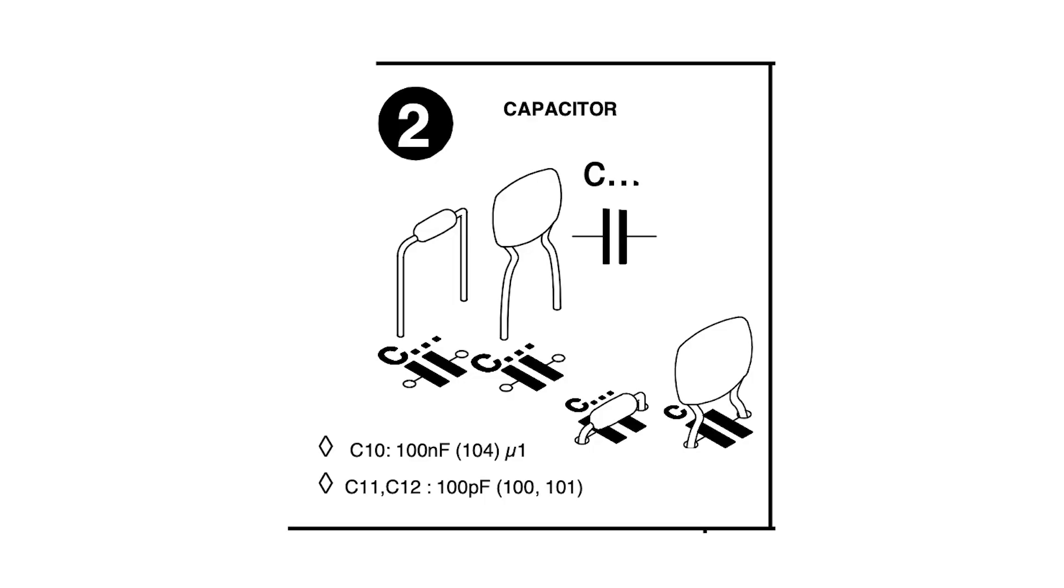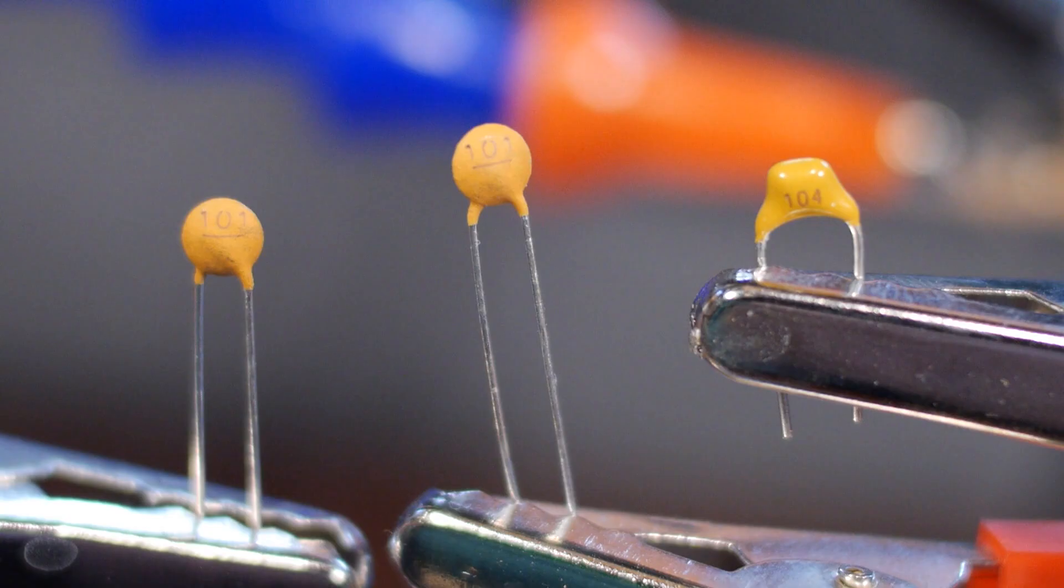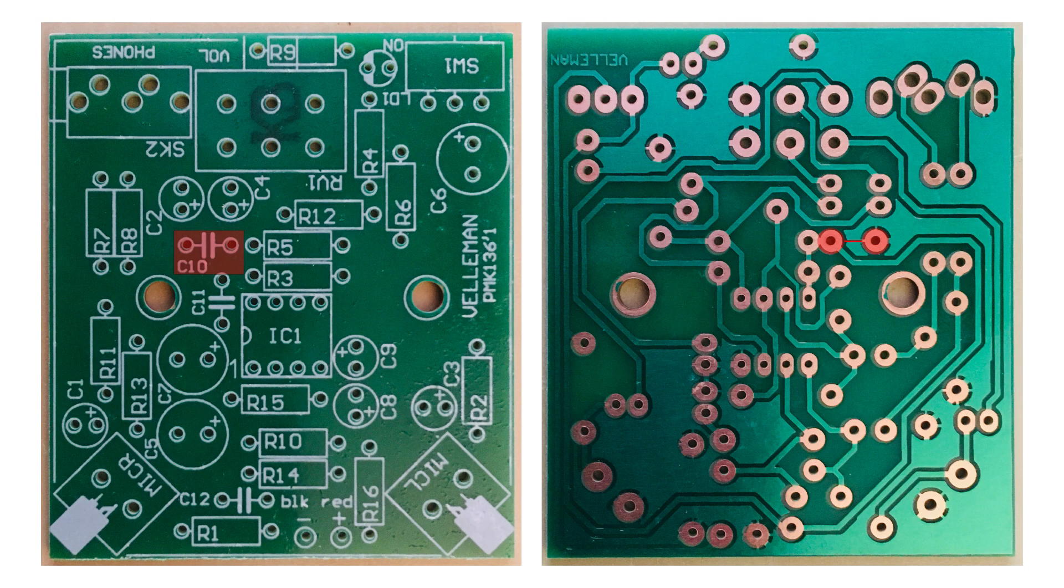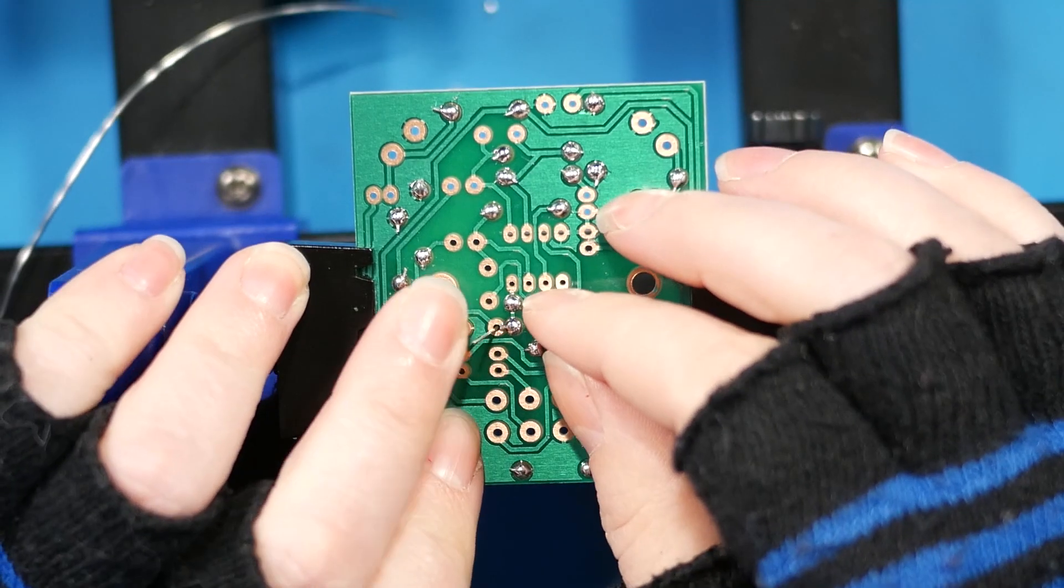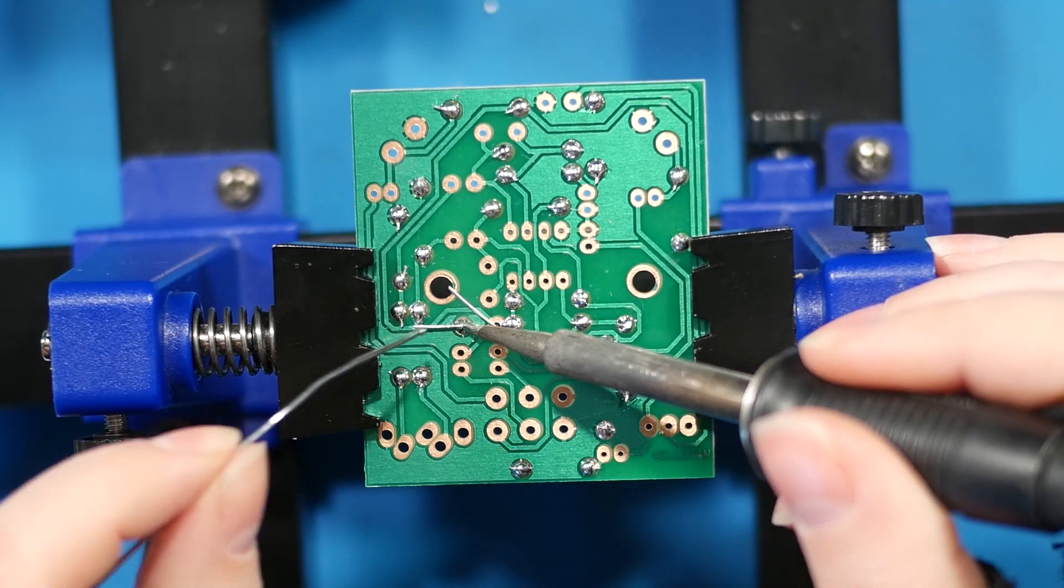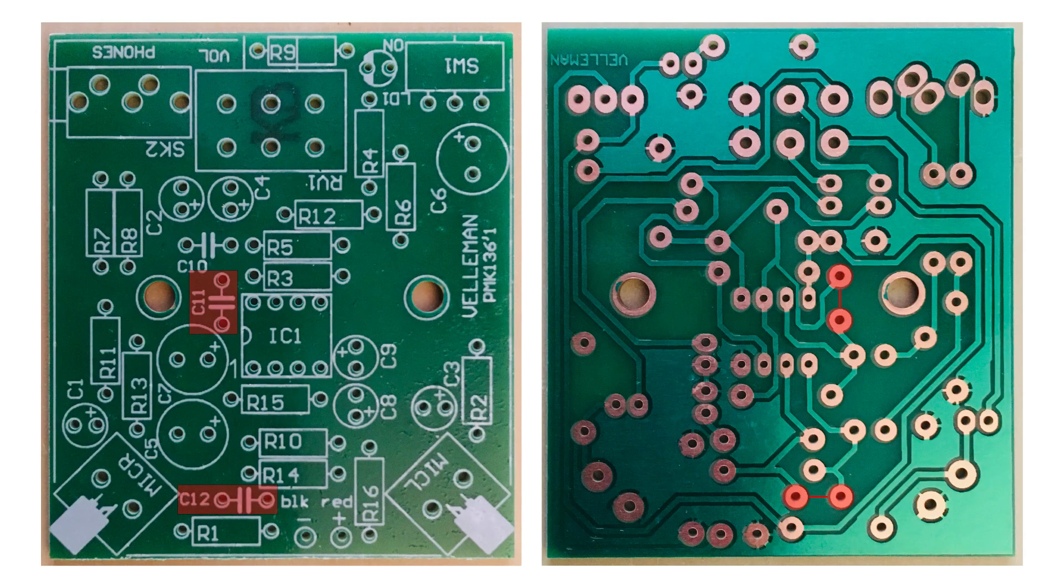For step two, find all three non-polarized capacitors. Their places will be marked with this symbol. One should be labeled 104 and two labeled 101. Place the larger 104 in C10. Place the two others labeled 101 in C11 and 12.